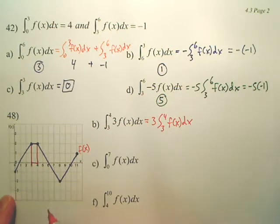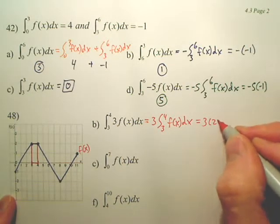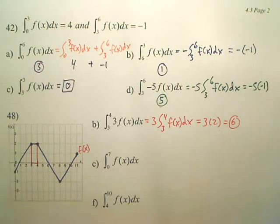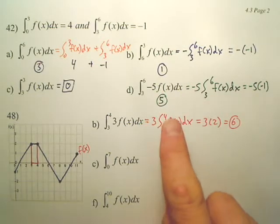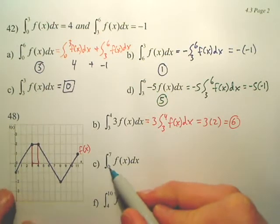We're basically going from 3 to 4. This is f(x). So what's the area of that? 2. Yeah, it's 2 blocks. It's 2. So what would my answer simply be? 3 times 2, which is 6. So the area of f(x) from 3 to 4 is 2, but this 3 in front means triple it.